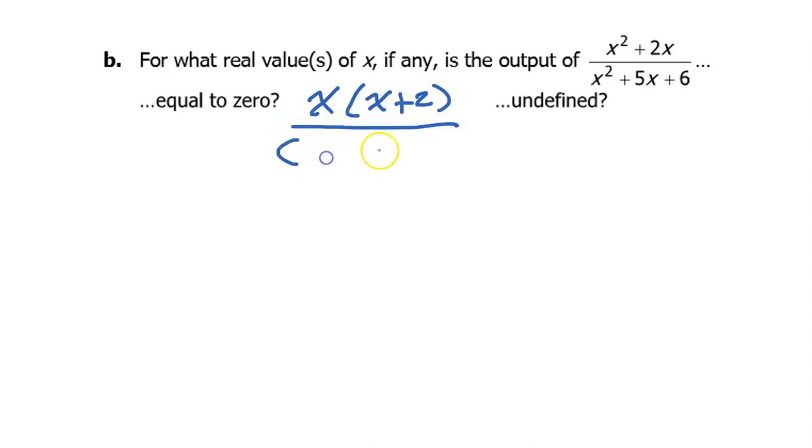The denominator will probably factor as a binomial times a binomial. x squared is x times x. 6 is either going to be 2 times 3 or 1 times 6. I'm looking at the 5. I'm going to go with 2 times 3. We can get a positive 5 by making both of these positive, and positive 2 times positive 3 is positive 6. So that's how you factor it.